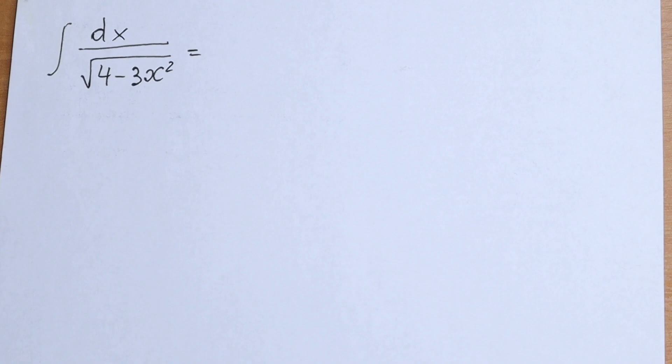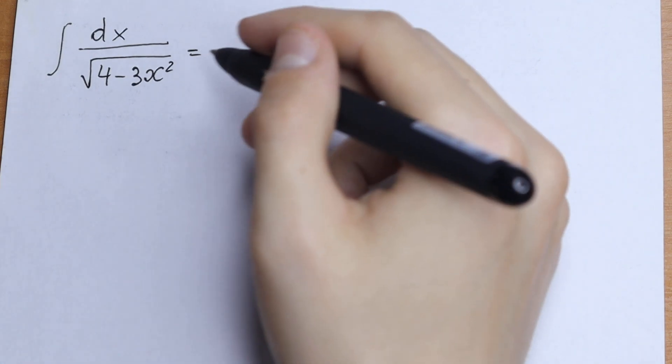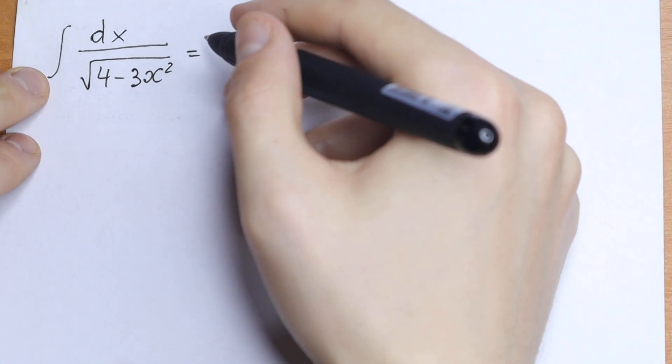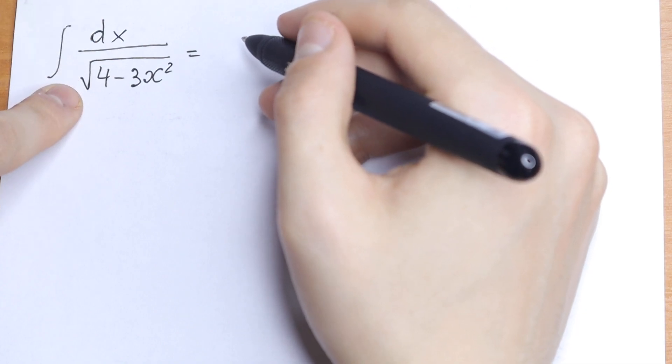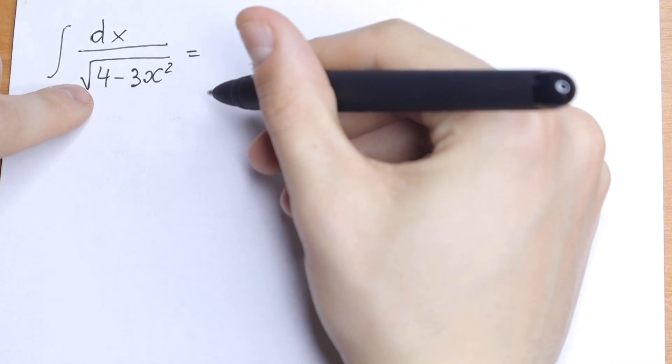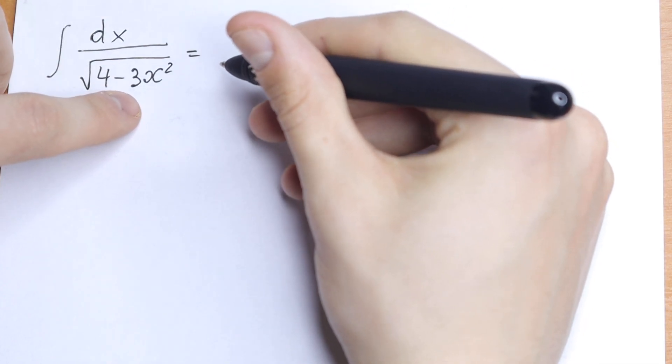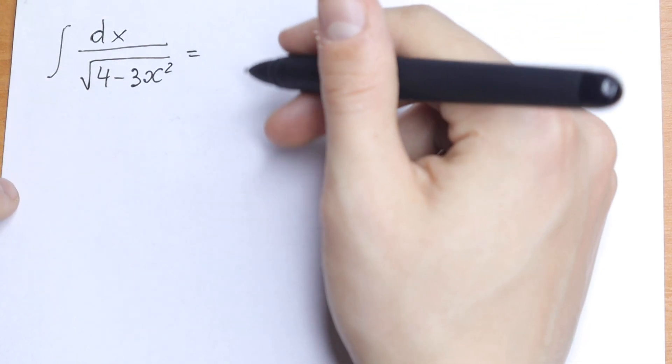Hello everyone, welcome back to High Mathematics. Today we have an interesting integral: the integral of dx over the square root of 4 minus 3x squared.